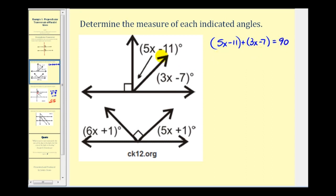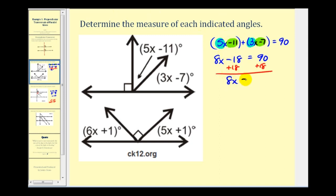Let's go ahead and solve this equation for x, and then we can come back and determine the measure of each of these angles. Combining like terms, we'd have eight x. Negative eleven plus negative seven is negative eighteen, so eight x minus eighteen equals ninety. We'll add eighteen to both sides, giving us eight x equals one hundred eight. Dividing both sides by eight, we get thirteen and a half, or thirteen point five.